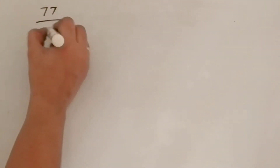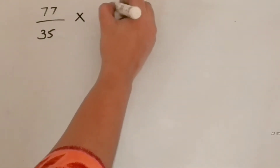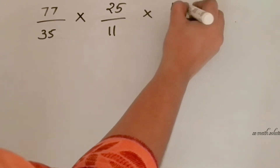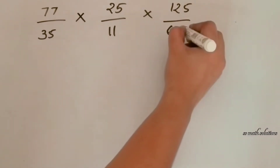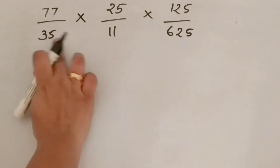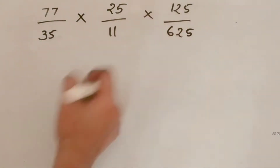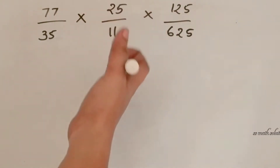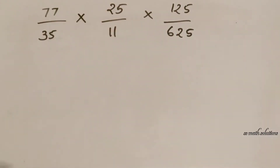Let's get into our topic. Here is our first example: 77/35 × 25/11 × 125/625. Here some multiples of 5 are present, multiples of 25 are here, and multiples of 11 are here.